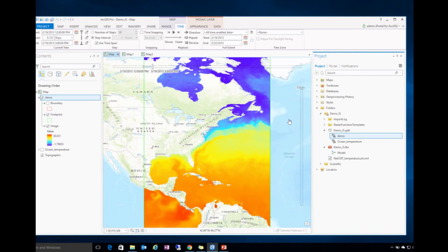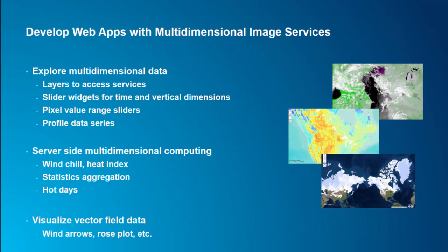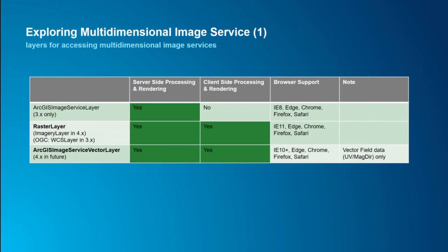Now it's the second part of the talk. Thanks, Hong. Now let's look into different types of web applications we can build with the ArcGIS JavaScript API for multidimensional image services. There are three patterns we'll show today: the first is using the JS API to explore multidimensional data; the second is leveraging server-side raster functions and processing templates for server-side computing and analysis; the third is multidimensional data visualization for vector field data.